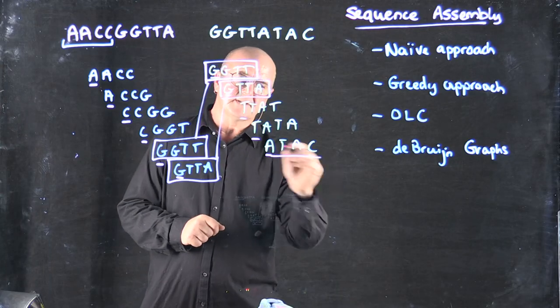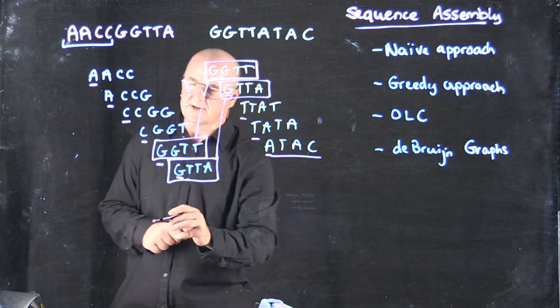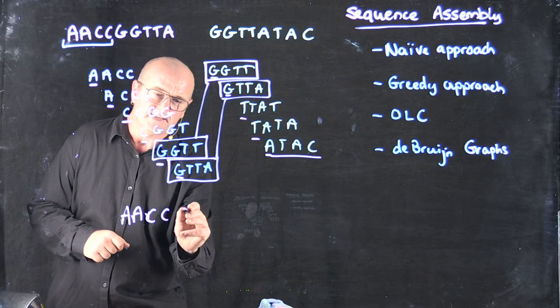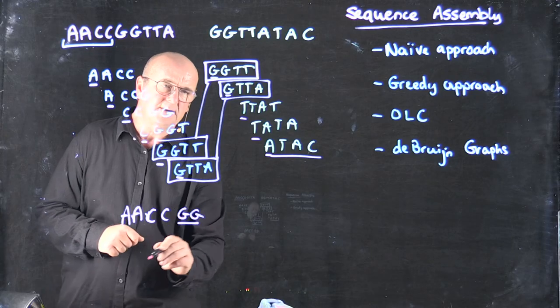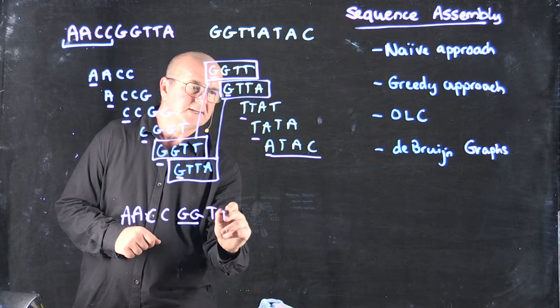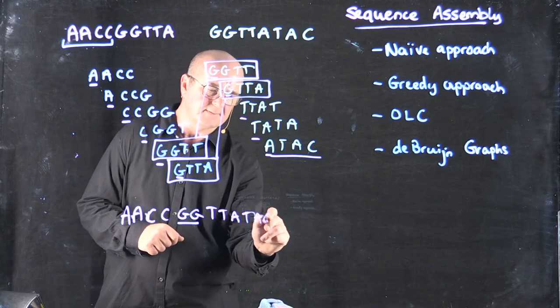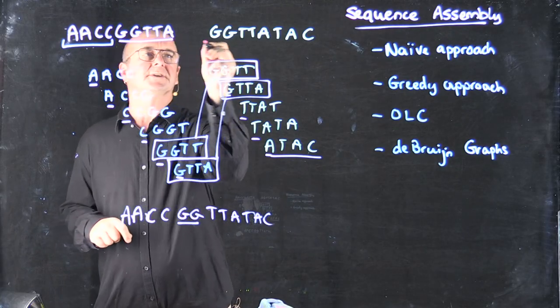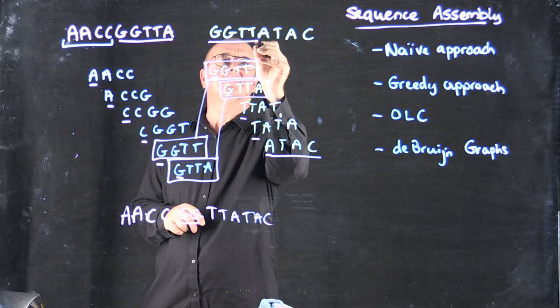Because I'm at the end of the sequence I can take the rest of those bases. So my sequence would be AACCGG, which is my overlap, TTATAC. And you can see that that's clearly the combination of these two sequences.